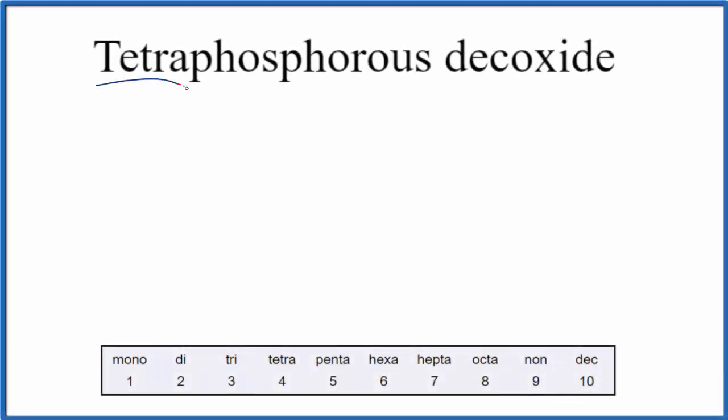Let's write the chemical formula for tetraphosphorus decoxide. We see we have phosphorus here and oxide, that would be oxygen. Phosphorus and oxygen are non-metals, so this is going to be a molecular compound, and that's why we're using these prefixes here.